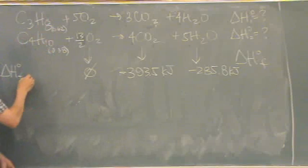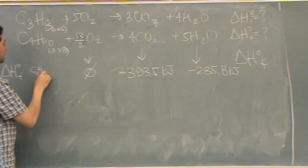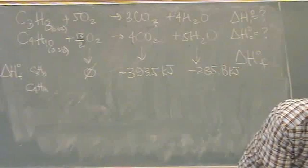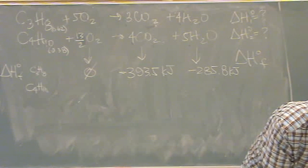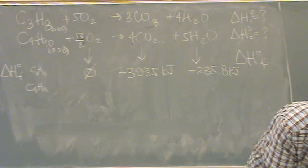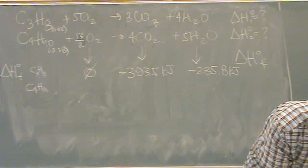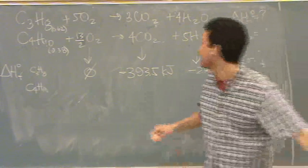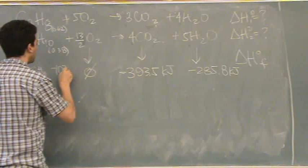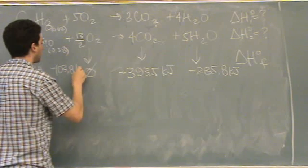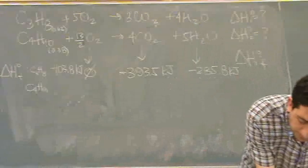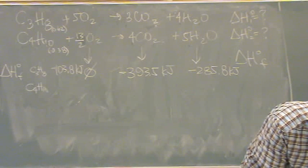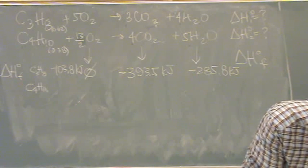And then here, there's two. So, there's the C3H8 and the C4H10. So, I got two values to look up here. Let's see. Where are those things? Here we go. So, C3H8 is minus 103.8. And then, let's see if I can find the other one. C4H10. Where is that thing? Minus 125.6.